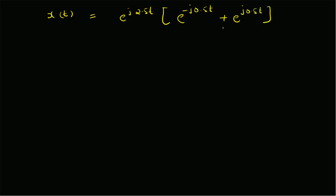This is clearly equal to two times cos(0.5·t). Therefore x of t is equal to two times cos(0.5·t) multiplied by e^(j·2.5·t).